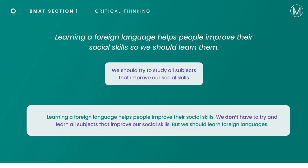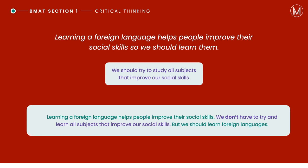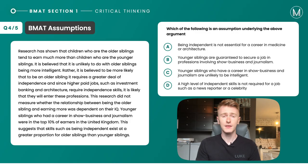If we apply the negative test to the other option — we don't have to try and learn all subjects that improve our social skills — and read it with the premise and conclusion: learning a foreign language helps people improve their social skills; we don't have to learn all subjects that improve our social skills; but we should learn foreign languages. This doesn't damage the argument at all — it's clearly still highlighting foreign languages as a key subject. So this is an incorrect option because it's not the assumption.